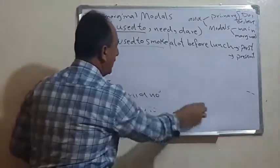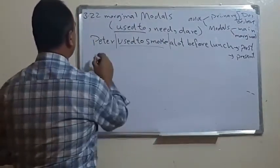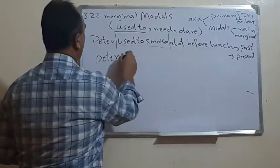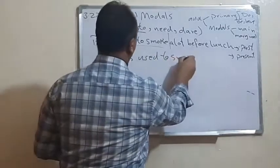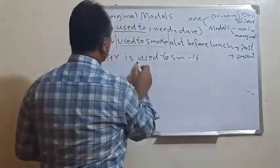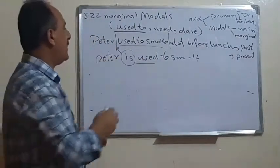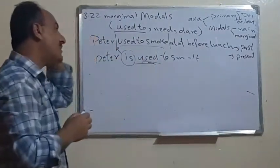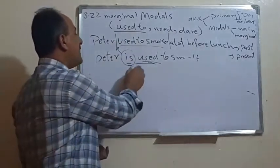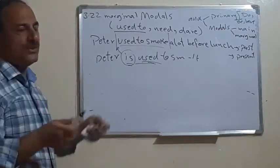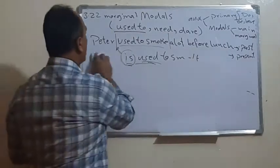For example, we can say 'Peter is used to smoking.' Here 'used to' is not a modal or auxiliary verb because the main verb is 'is'. This is a different expression with a different meaning. That concludes 'used to'; now we move to the second marginal modal verb.